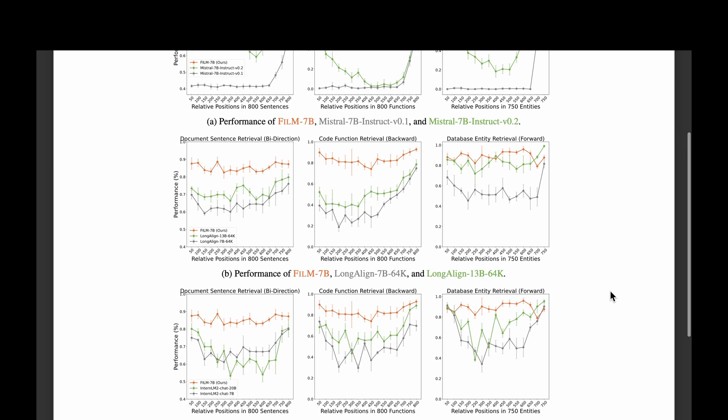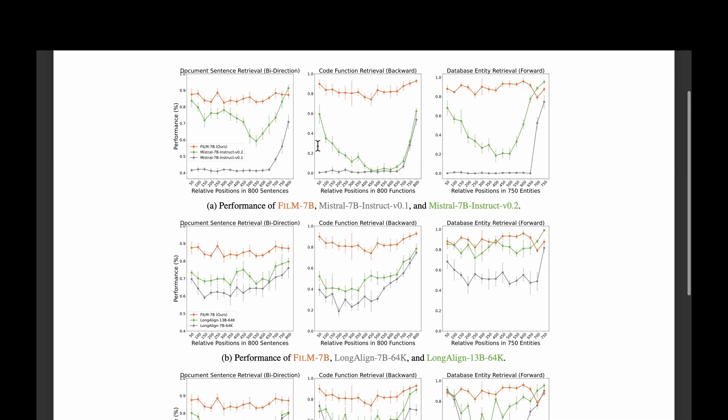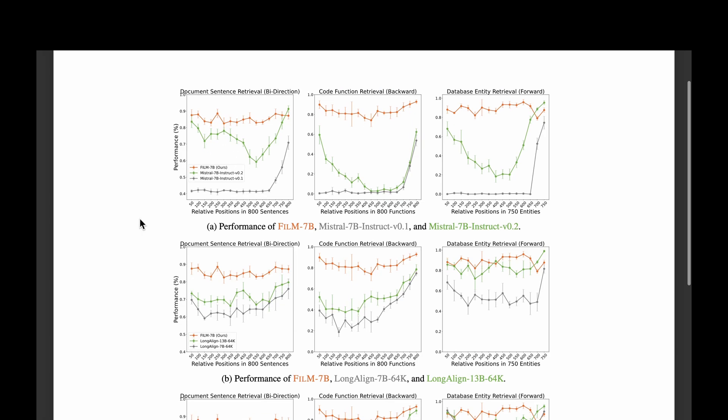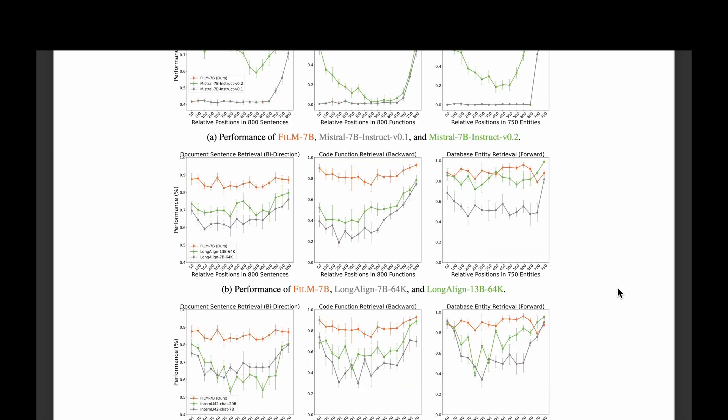So with that information on VAL probing, let's look at how they evaluate the performance of FiLM 7B. One of the problems with long context models is something called the lost in the middle problem. So if we take a long context of, say, 800 sentences, then we can see that other models like Mistral 7B Instruct version 2 have a dip in the middle. So this is a typical lost in the middle problem. But the proposed model seems to overcome that, which we can see in this orange line. Similarly, we can see the same applies for the code function retrieval and also database entry retrieval. A couple of other state-of-the-art models are LongAlign and InternLM2. Even those two models, we can see that they are suffering from the lost in the middle problem. But when it comes to the proposed FiLM 7B, it doesn't suffer from the lost in the middle problem, as we can see from this orange line here in all these plots.